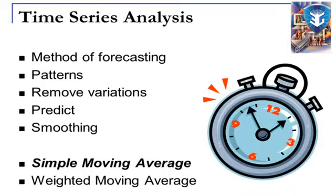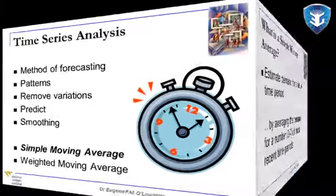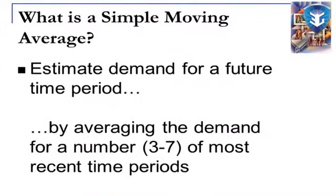The two most basic types of time series analysis are simple moving averages, covered in this video, and weighted moving averages, covered in a separate video. A simple moving average is an estimate of the demand for a future time period, obtained by averaging the demand for a number — usually between 3 and 7 — of the most recent time periods.